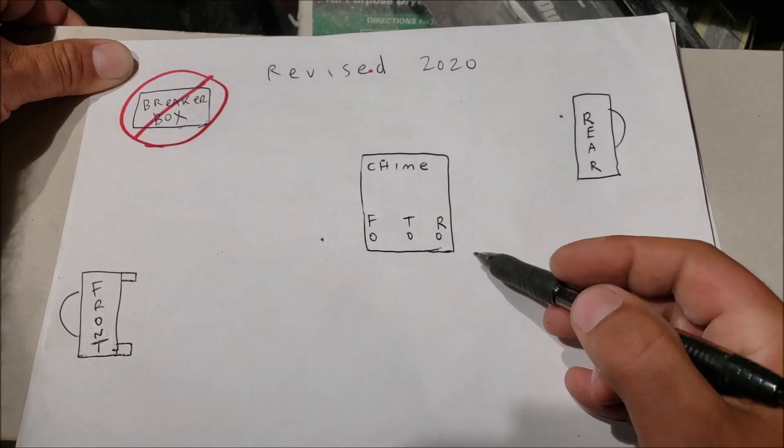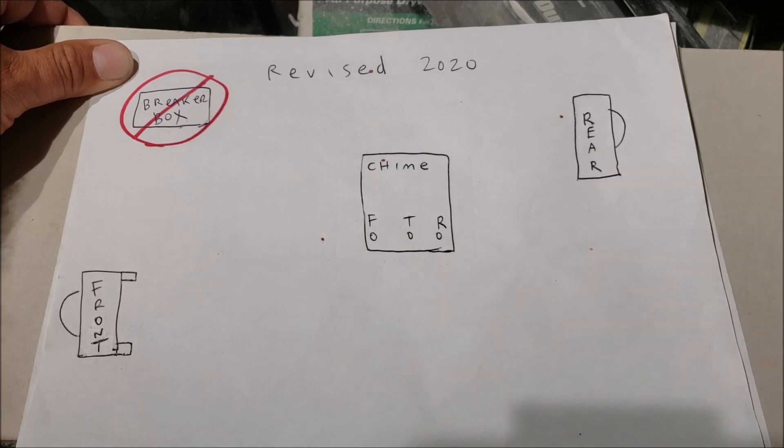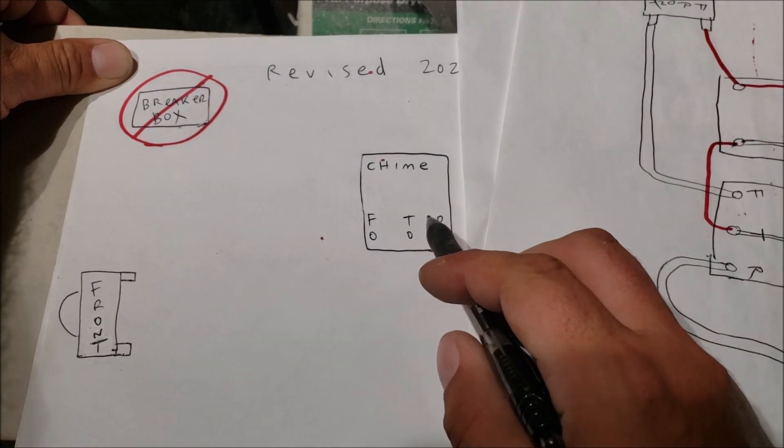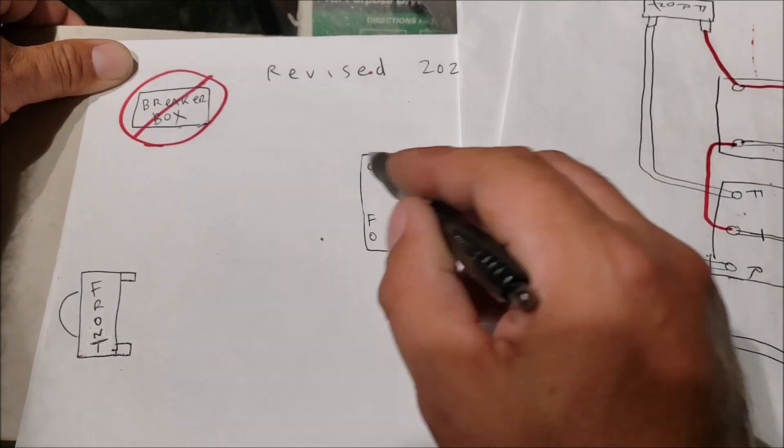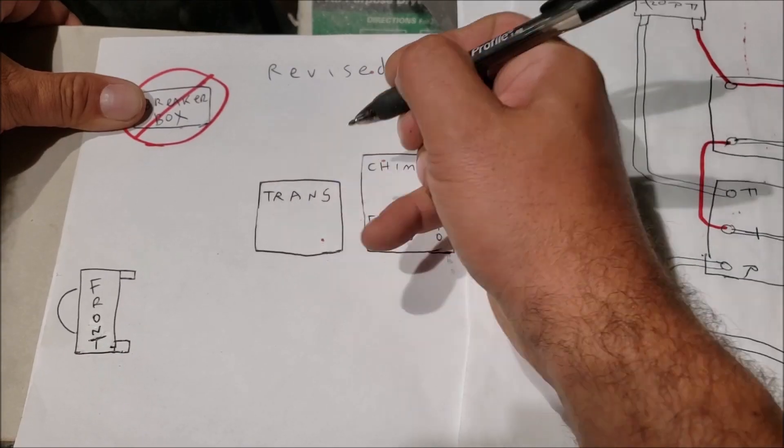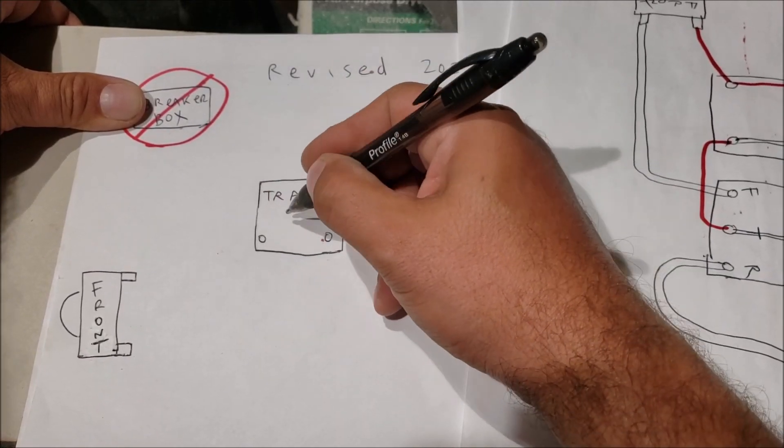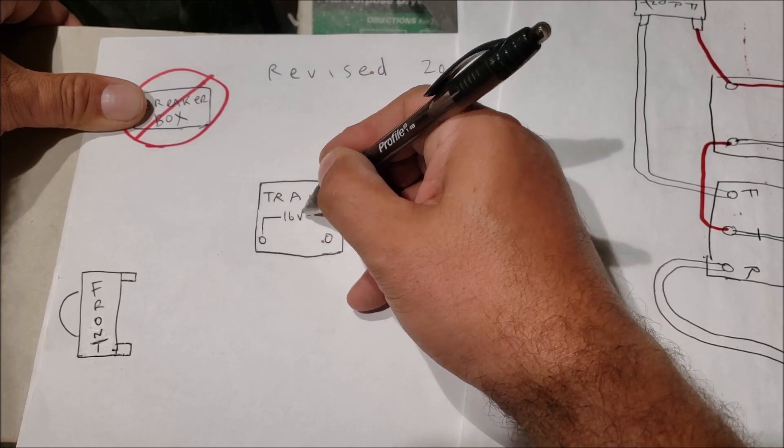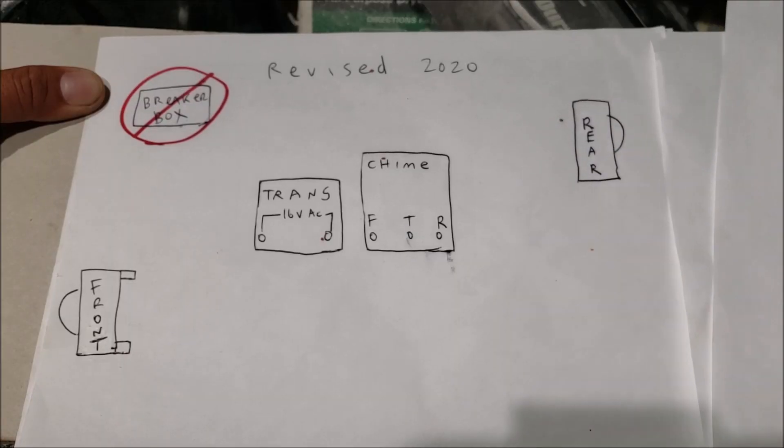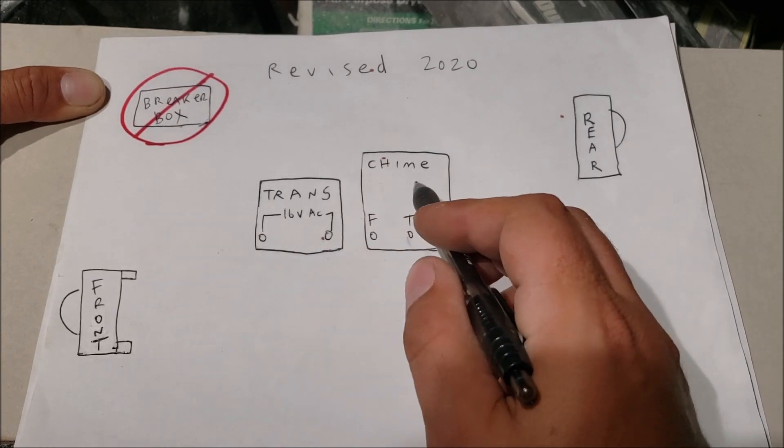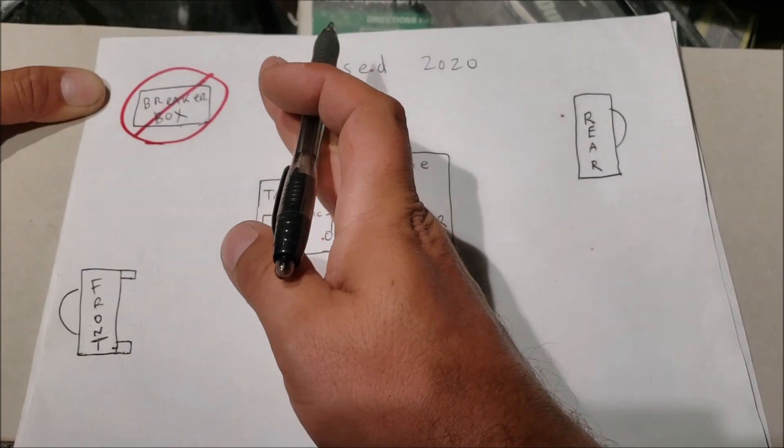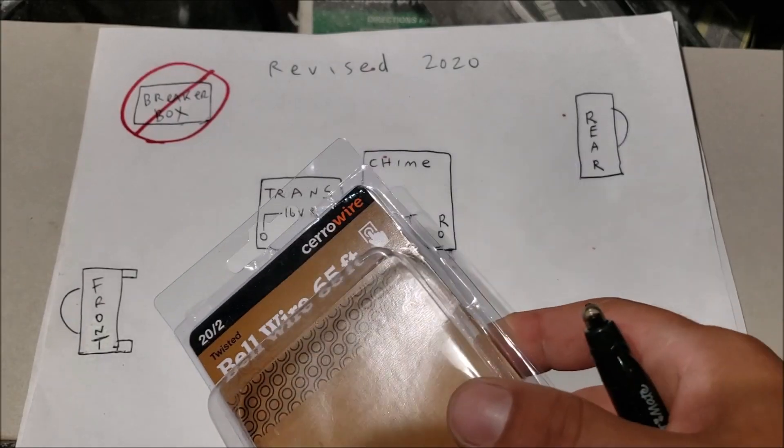We have the chime right there. If you're only running a front doorbell, ignore the rear and you want your transformer in between these two. We can put our transformer right there. This one is 16 volts AC. If you run a rear doorbell too, you want these two as close together in between the two doorbells.